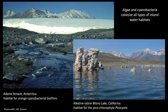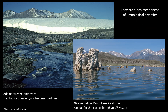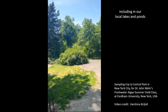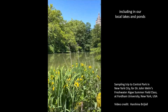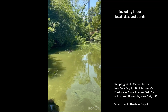Algae and cyanobacteria colonise all types of inland water habitats. From biofilms in dilute glacial streams to the plankton of hypersaline lakes and ponds, they are a rich component of limnological diversity, including in our local lakes and ponds.